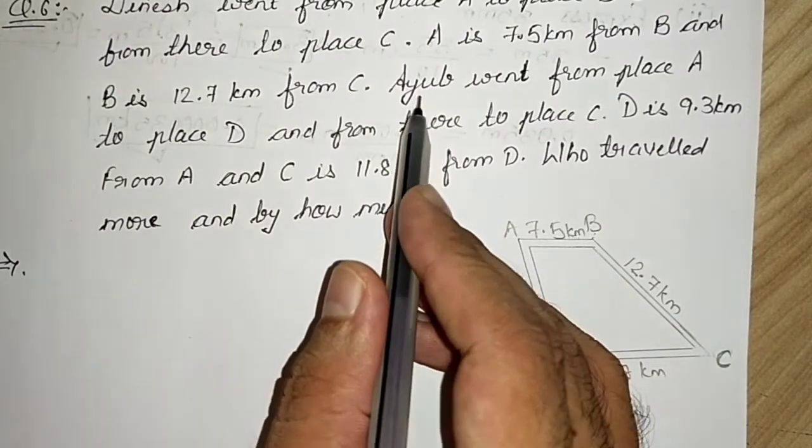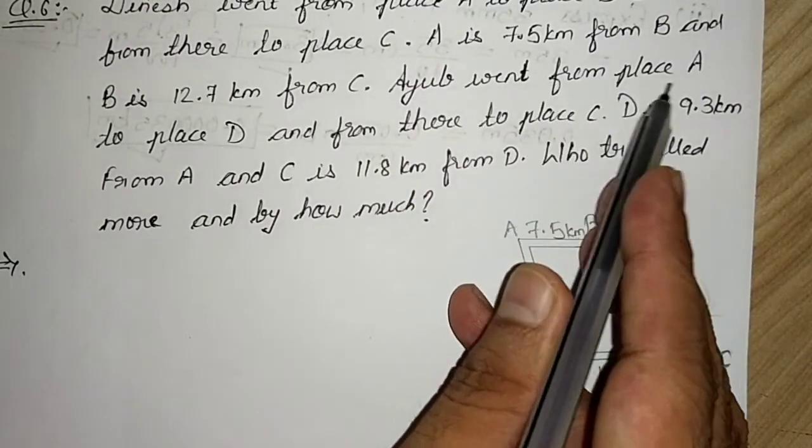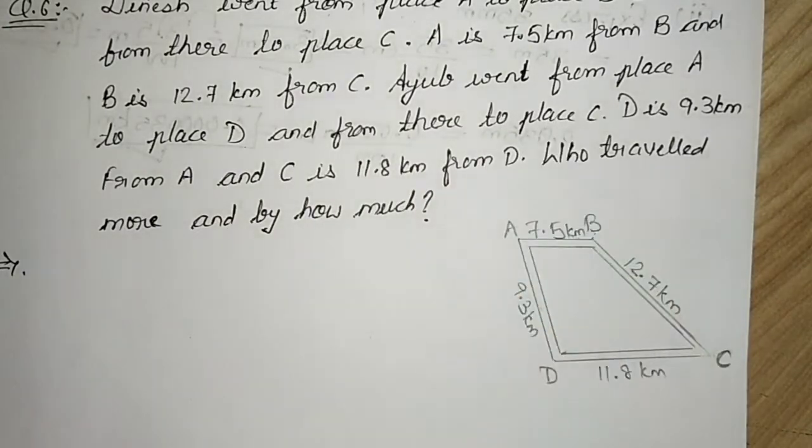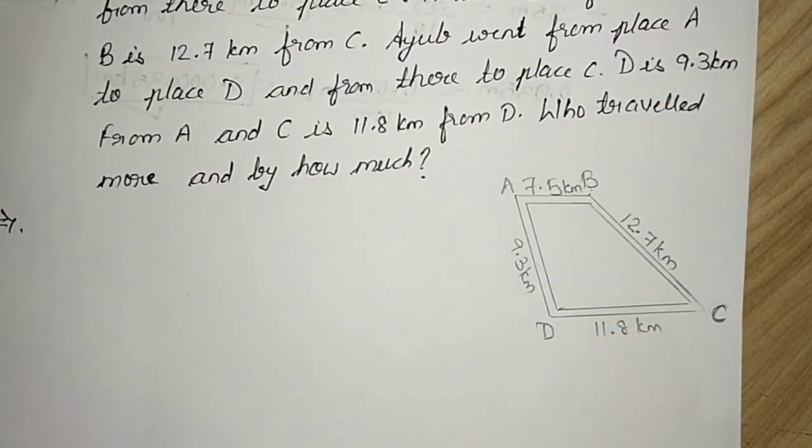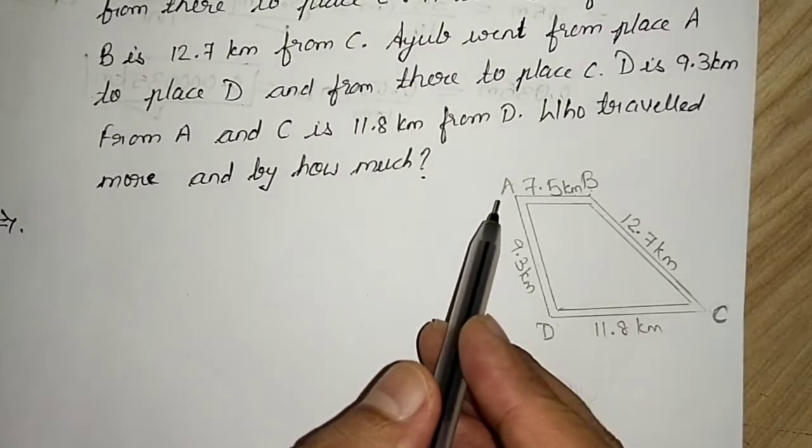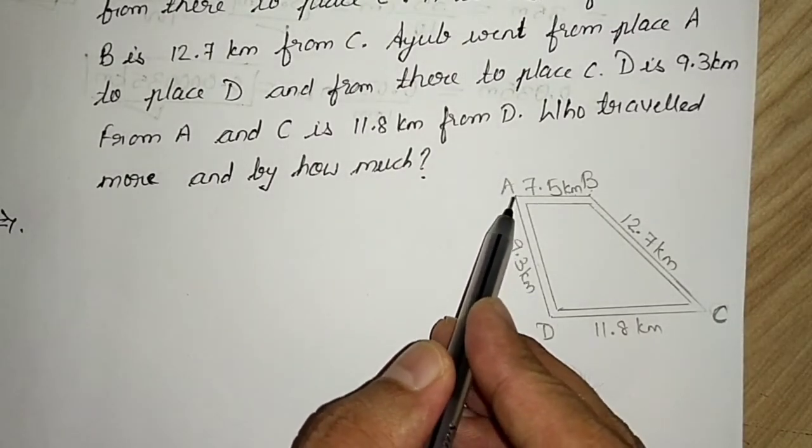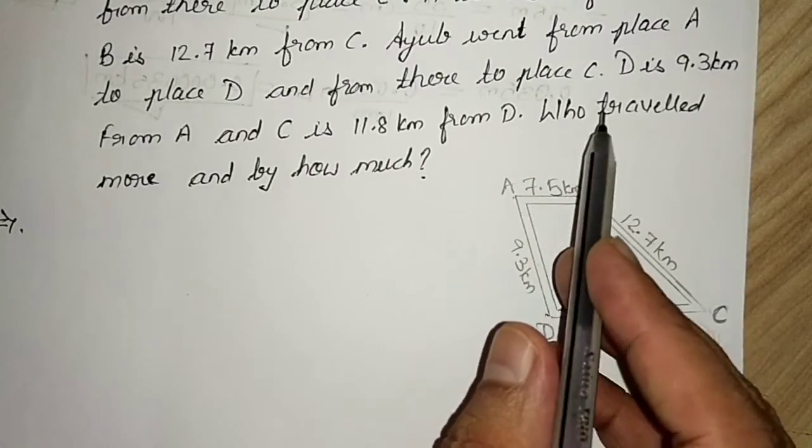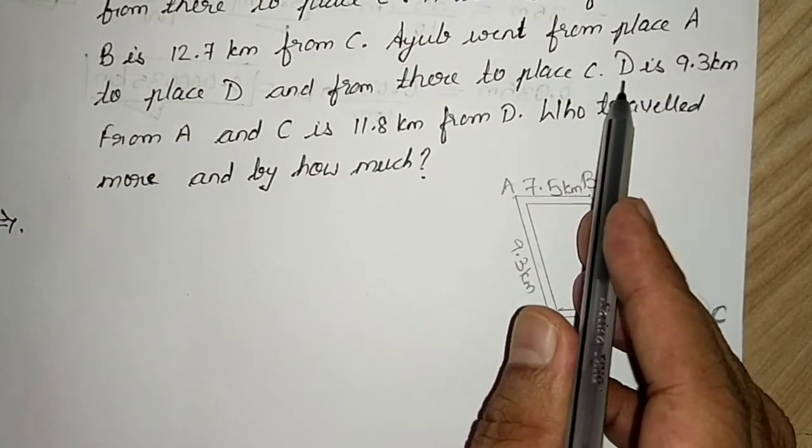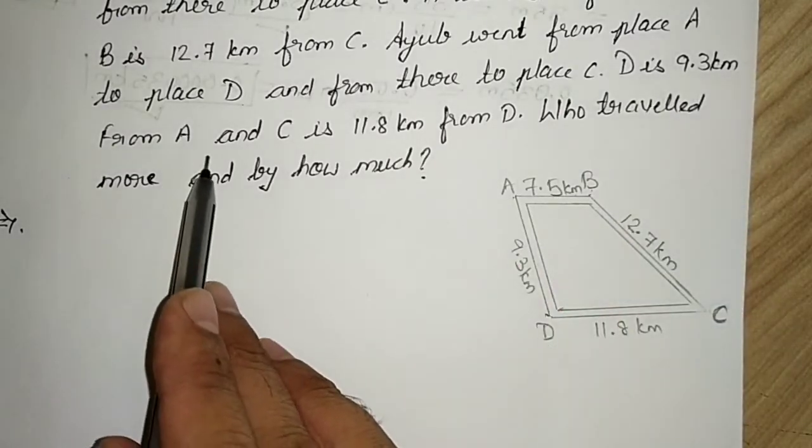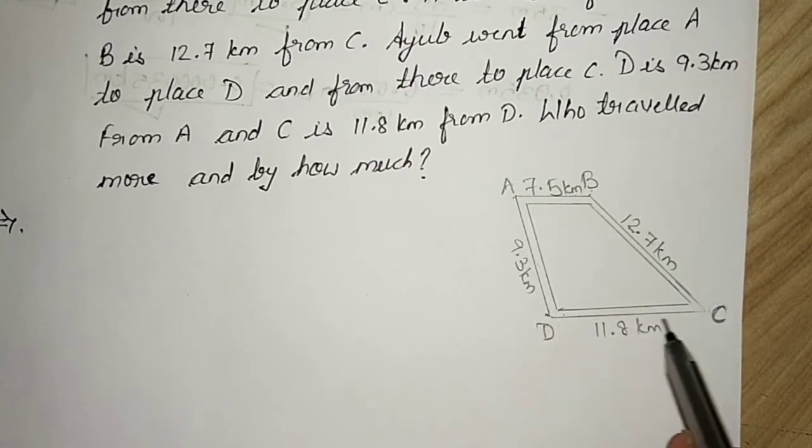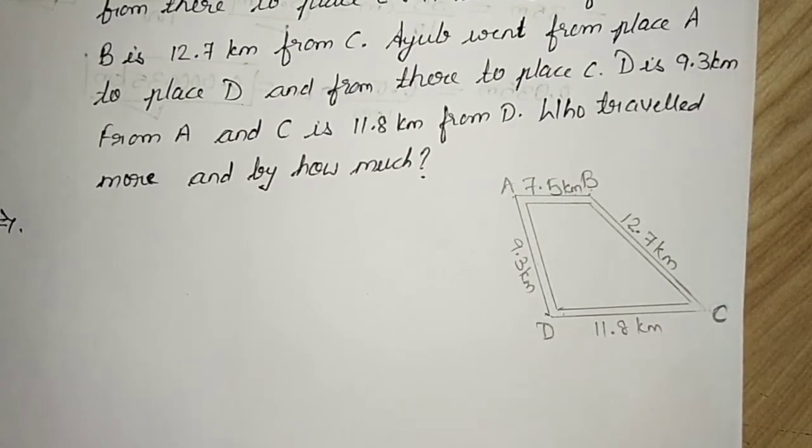Another boy, Ayub, went from place A to place D and from there to place C. D is 9.3 km from A, and distance between D and C is 11.8 km.